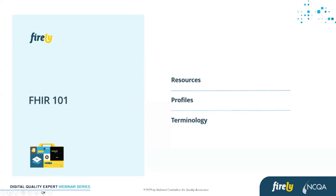The next thing that makes up FHIR is profiles. Profiles are conformance resources that force those resources to conform to a certain set of data, so certain values like the patient's name, gender, and birth date might be required. Profiles can be stacked on top of each other — there might be a base patient profile, but in the US market we have the US Core patient profile. Stacked profiles can either extend or further restrict what data is required. Implementation guides tell you what resources are required for a certain use case and what operations the FHIR server can perform on those resources.